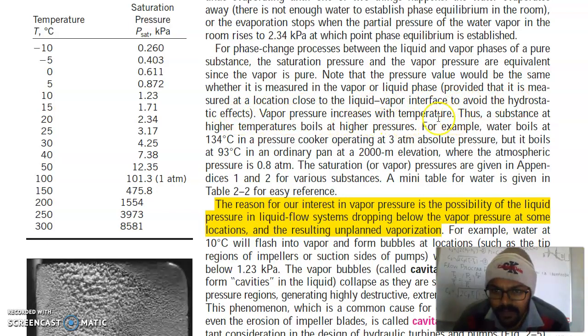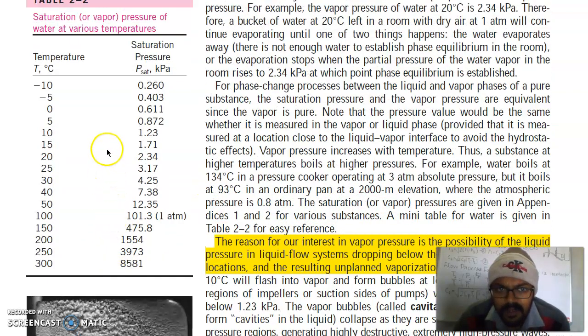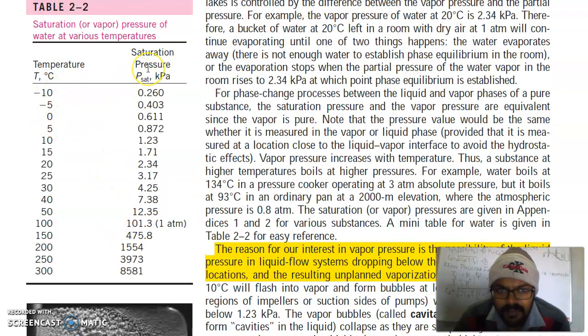Vapor pressure increases with temperature, thus a substance at higher temperature boils at higher pressure. For example, water boils at 134 degrees Celsius in a pressure cooker operating at 3 atmospheres but it boils at 93 degrees Celsius in an ordinary pan at 2000 meter elevation where the atmospheric pressure is 0.8 atmospheres. You can see here, this is temperature versus saturation pressure. The water boiling temperature will increase as the saturation pressure increases.